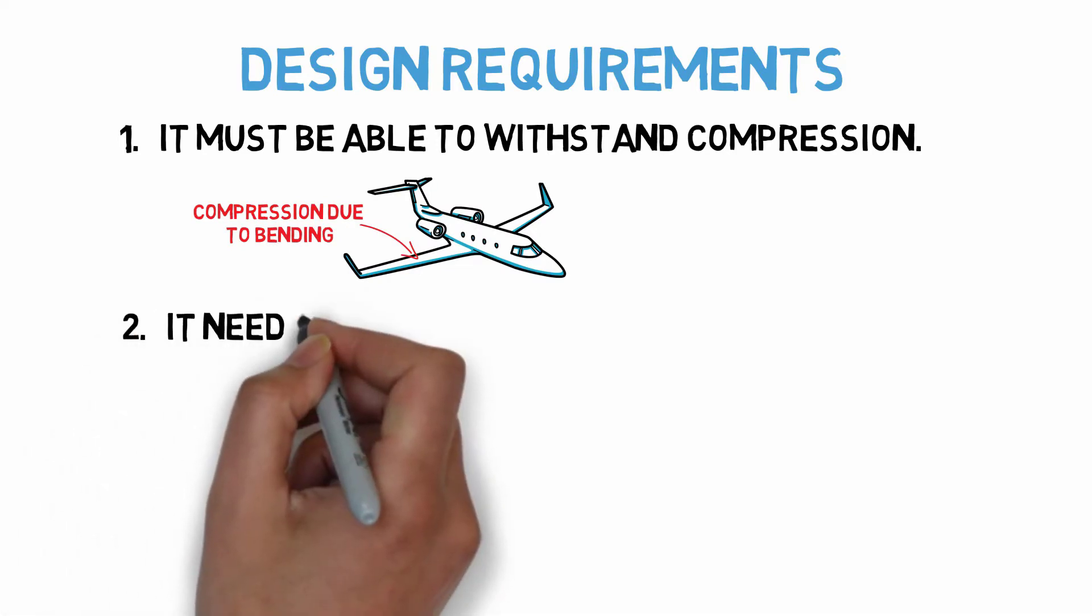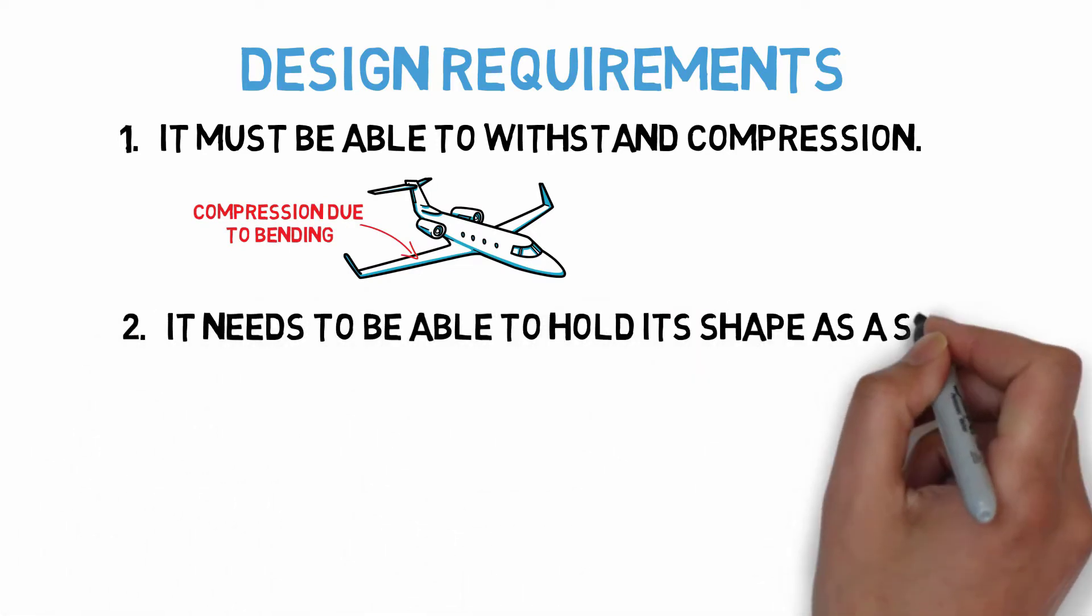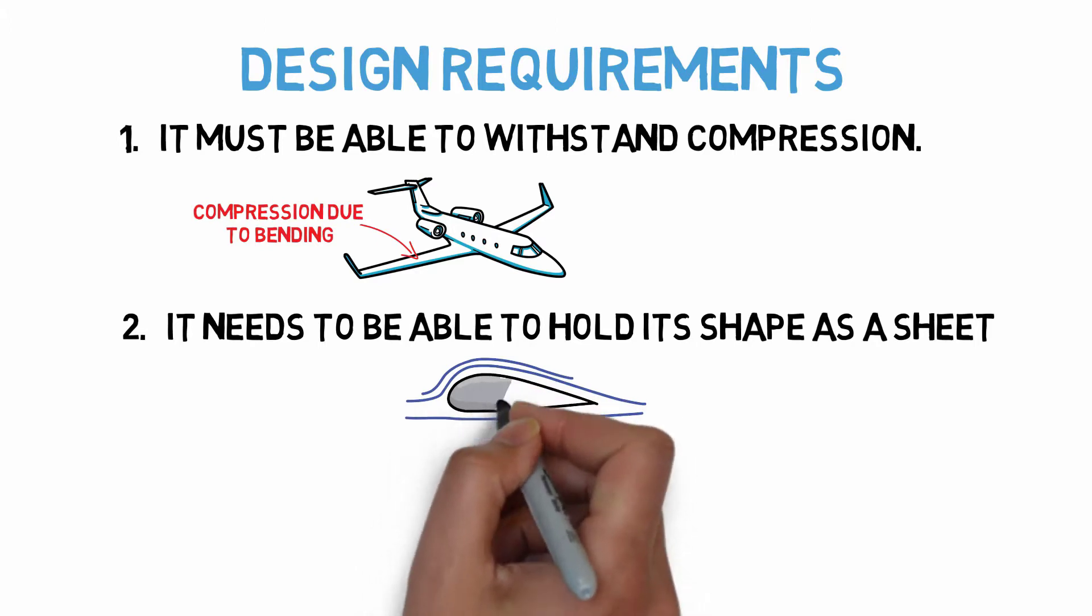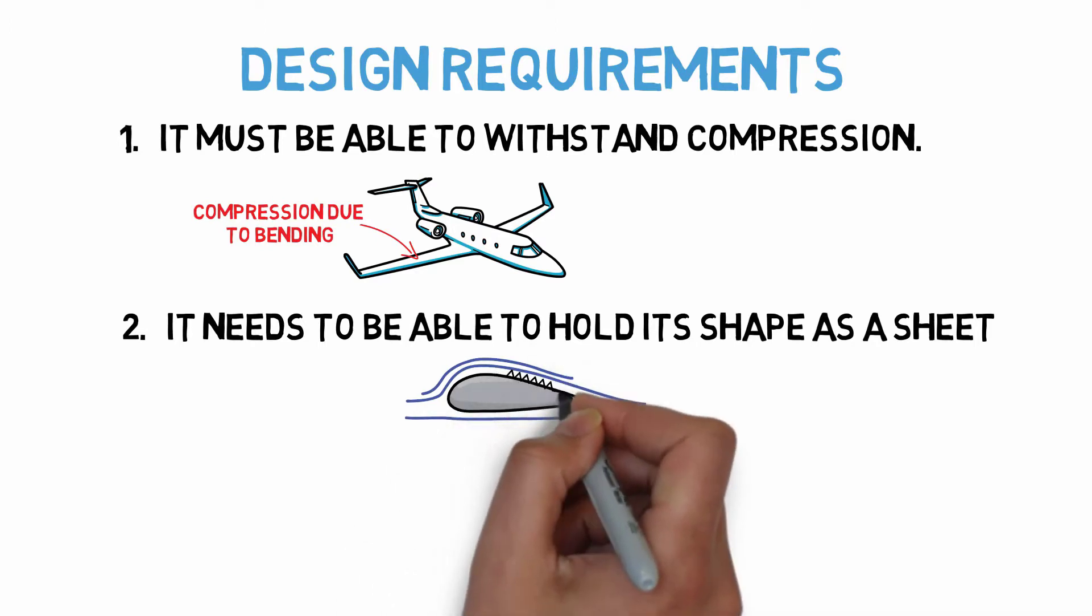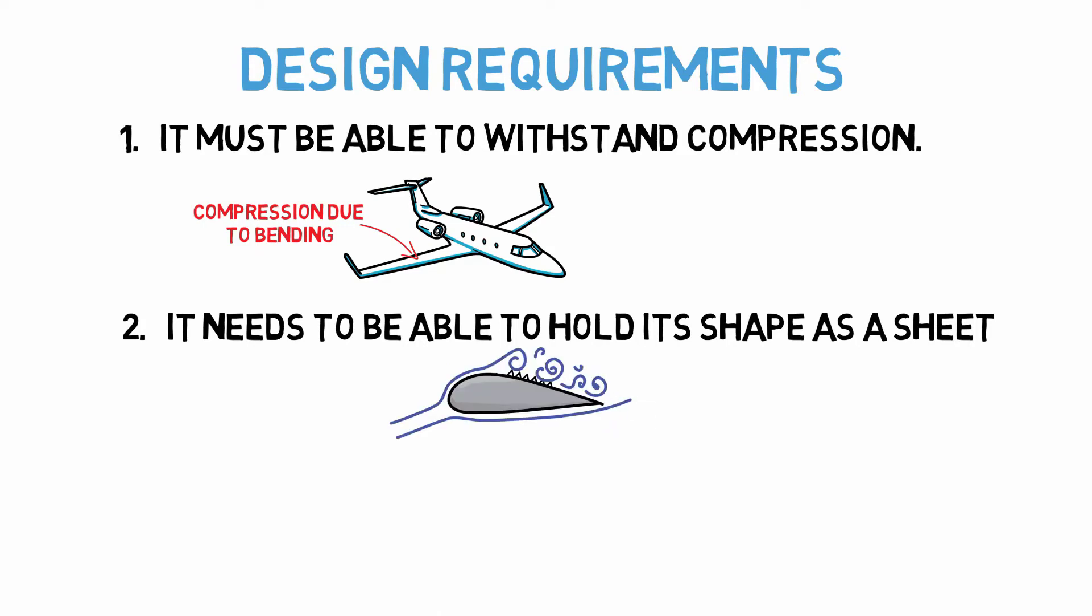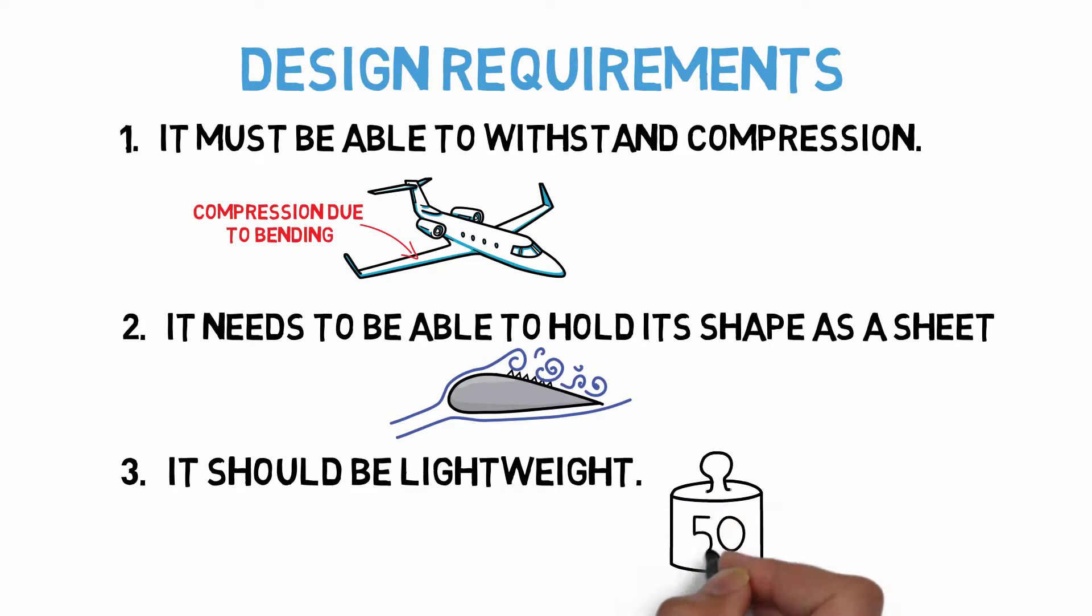Two, it needs to be able to hold its shape as a sheet. We want it to be able to handle loads but also not to deform significantly under them. If it does, it could affect the aerodynamic profile of the wing, among other things. And three, it should be lightweight. Weight is critical in aerospace design, so the lighter the better while still being safe.